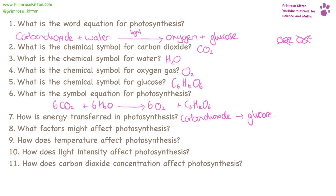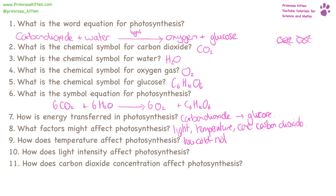What factors might affect photosynthesis? How much light there is, the temperature, and the concentration of carbon dioxide. How does temperature affect photosynthesis? If it is too cold, nothing will happen. If it is too hot, then all the enzymes will get denatured.